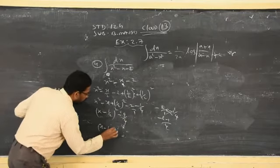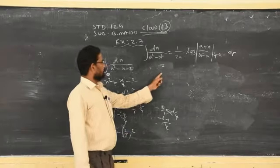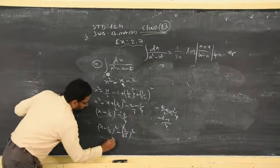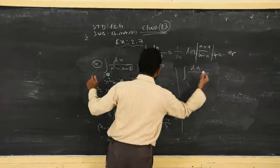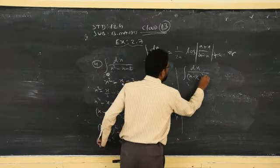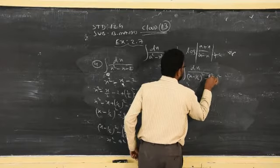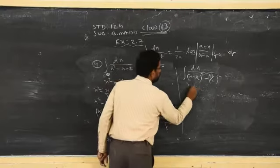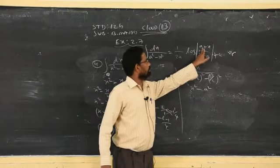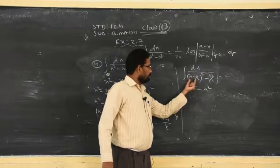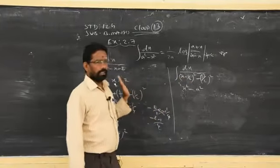So you can write this as (x minus 1 by 2) whole square minus (3 by 2) whole square. Now this is in the form of x square minus a square format. This will become the integration of dx by (x minus 1 by 2) whole square minus (3 by 2) whole square. This is in the form of x square minus a square, and you can use the same formula: in the place of x, you write x minus 1 by 2.